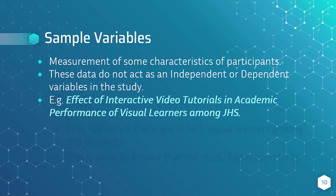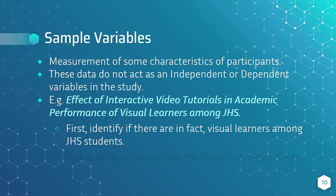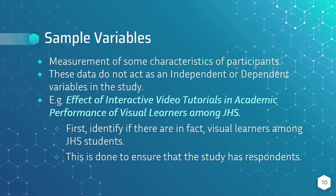For example, a researcher wants to study the effect of interactive video tutorials on the academic performance of visual learners among junior high school students. The researcher will have to identify the visual learners among the junior high school students first. This is only done for the research to move forward and is not exactly needed in the actual testing of the hypothesis or answering the research problem. It is just there to ensure that there are respondents to the study.